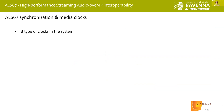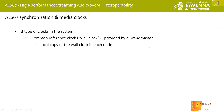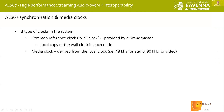The whole system comprises three different clocks. First, the common reference clock called the wall clock, provided by a grandmaster — any node in the absence of a designated grandmaster can take that role. Then there's a local copy of the wall clock inside each node via PTP. Then we have the media clock, derived from that local clock — 48 kHz for audio, 90 kHz for video, or any other required clock. And finally, the stream clock: stream data is transported with RTP, and the RTP clock is derived from the media clock.